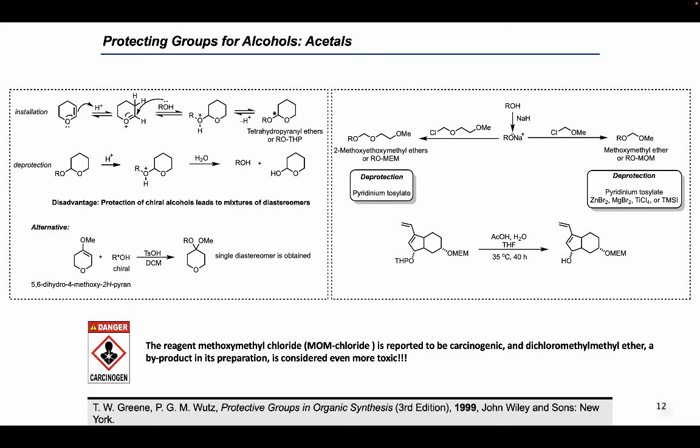Another class of protecting groups used for alcohols is acetals and ketals. These are also inert to basic and nucleophilic reagents and remain unchanged under hydride reduction and organometallic reactions, and they protect the hydroxy group against oxidation. The tetrahydropyranyl ether (THP group) is applicable when mildly acidic hydrolysis is appropriate for deprotection. It is introduced by an acid-catalyzed addition of the alcohol to the vinyl ether moiety in dihydropyran. A disadvantage of the THP group is that a new stereogenic center is produced, and if the alcohol is chiral, the reaction gives a mixture of diastereomers, which may complicate purification and characterization.